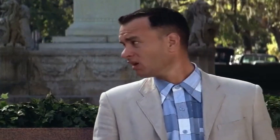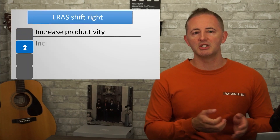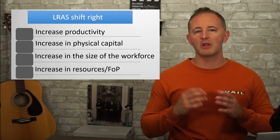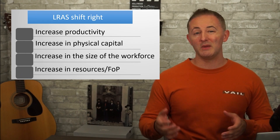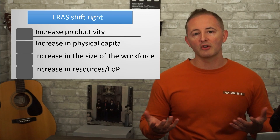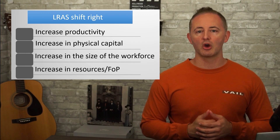I'm sure you want to know what shifts the LRAS — I have the answers for you. You really aren't going to have to draw this for the AP test, so that's one less thing. Basically, the same things that cause the PPC to shift outward will cause the LRAS curve to shift to the right. And just like how an outward shift of the PPC represents economic growth, a rightward shift of the LRAS curve also represents economic growth.